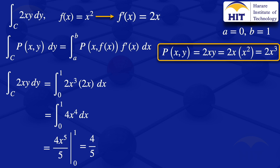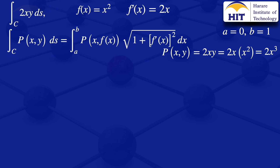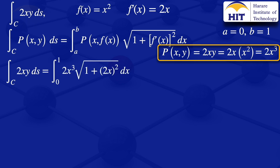At the end of the video I will give an alternative method for the integral with respect to y, but for now I move on to the line integral with respect to arc length ds. We have p of x, f of x equals 2x cubed and f prime of x equals 2x. Squaring f prime gives 4x squared, so the integral from 0 to 1 becomes 2x cubed multiplied by the square root of 1 plus 4x squared with respect to x.